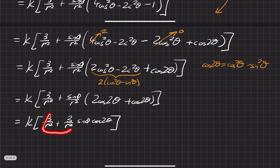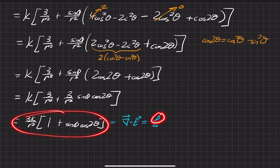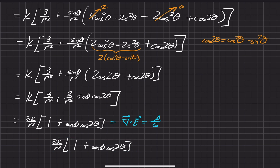Now we can factor out this 3 over R squared, and that leaves us with something nice and pretty. So 3K over R squared times (1 + sin φ · cos 2θ). When we're done taking the divergence, that's pretty much as simplified as we can get. But we're not done yet — this is still all equal to the divergence of E, which equals the charge density times the proportionality factor of 1 over epsilon naught. So we just need to multiply all of this by epsilon naught to get our charge density. The charge density is just equal to epsilon naught times 3K over R squared times (1 + sin φ · cos 2θ). And that is our answer.